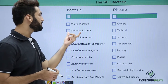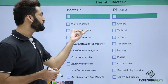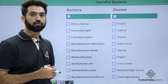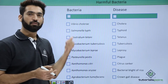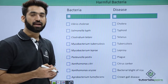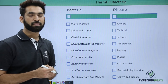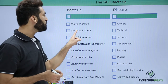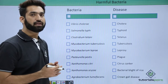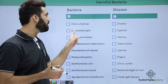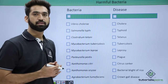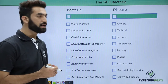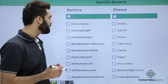Typhoid is caused by Salmonella typhi, sometimes written as Salmonella typhimurium. You may remember Salmonella was used in one of the experiments when we discussed sexual reproduction in bacteria. Clostridium tetani causes tetanus.